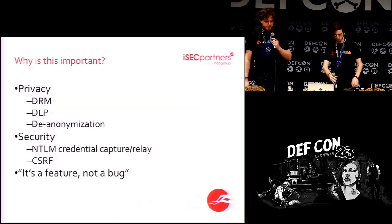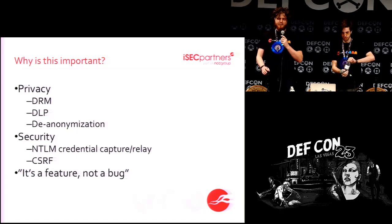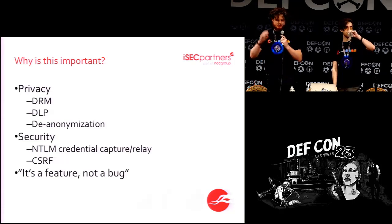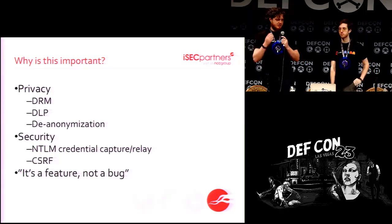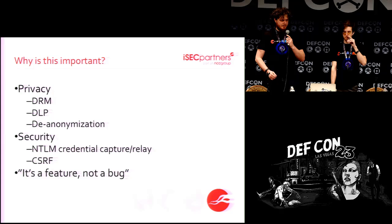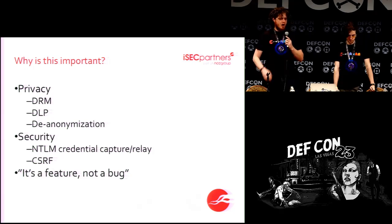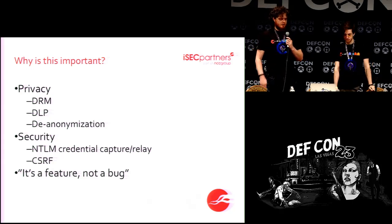So why do you care? We've broken it down into three main reasons. First and most obvious: privacy. There are obvious and hidden privacy implications. We're talking DRM files that phone home when you open them, data loss prevention — files on a corporate network that phone home when opened outside the network — and de-anonymization. There are also serious security implications: files that send NTLM credentials to an attacker. These are features, not bugs. They're not buffer overflows. They're not going to be fixed on Patch Tuesday. They're going to be around for years.